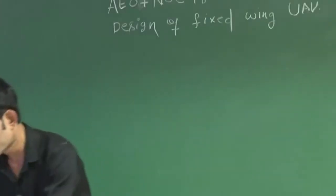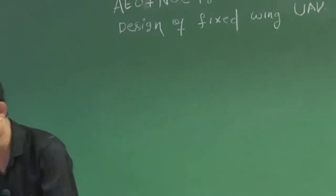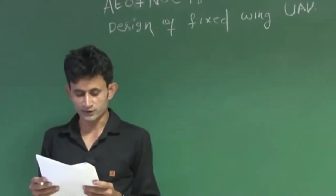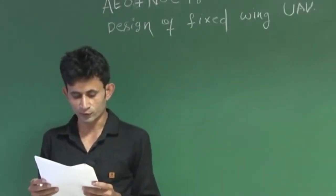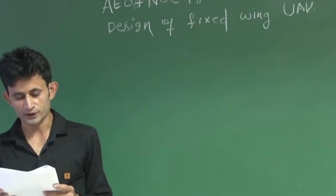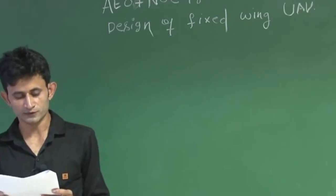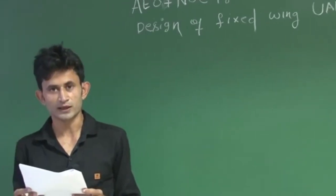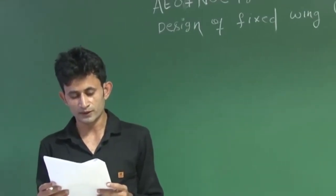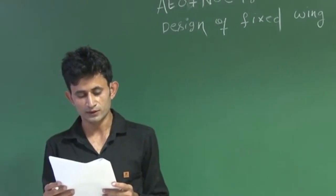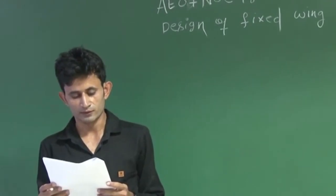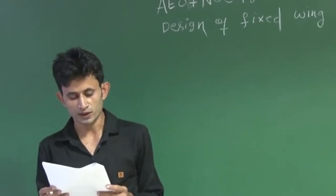Let us start with assignment 1. In question 1 you have to answer: the unmanned aircraft can be classified based on — the first option was size, second was weight of the unmanned aircraft, third was mode of operation, and fourth was all of the above. By seeing the question you can directly answer that.